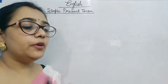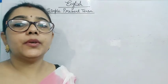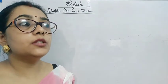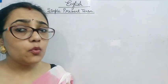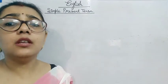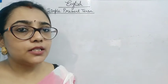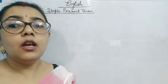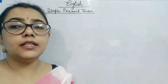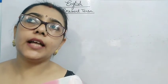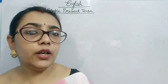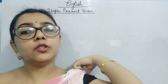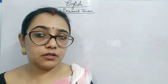In brief, simple present tense is when we use a verb to tell about anything which happens continually in the present, like every day, every week, or every month. We can use simple present tense for the action that happens regularly, or sometimes it never happens.